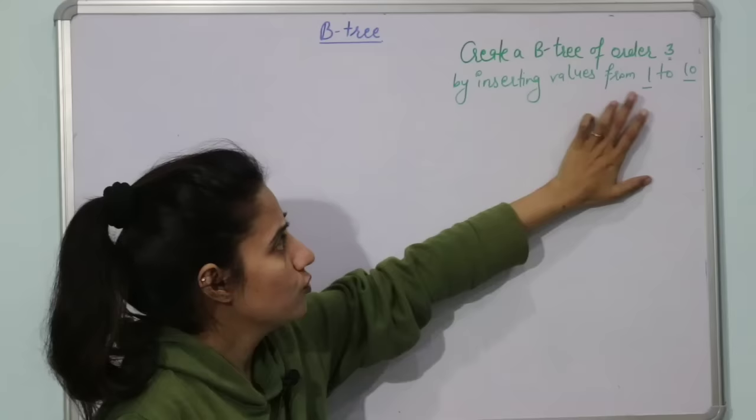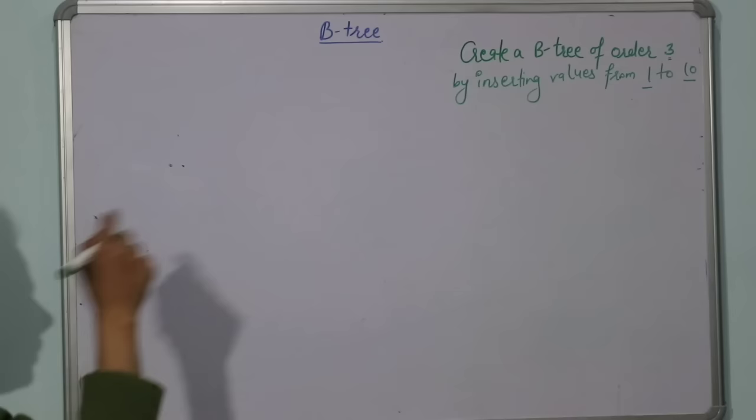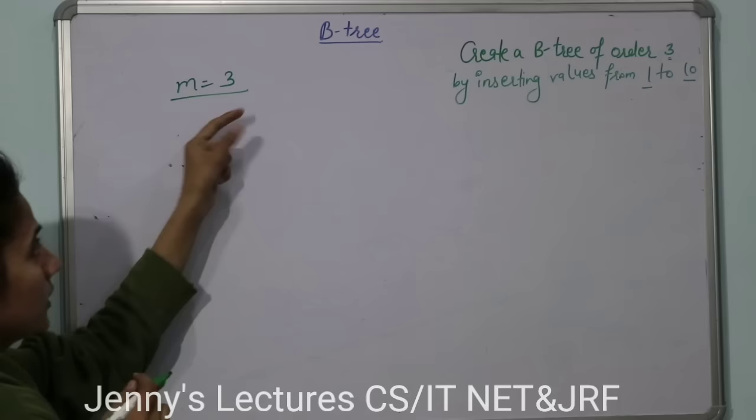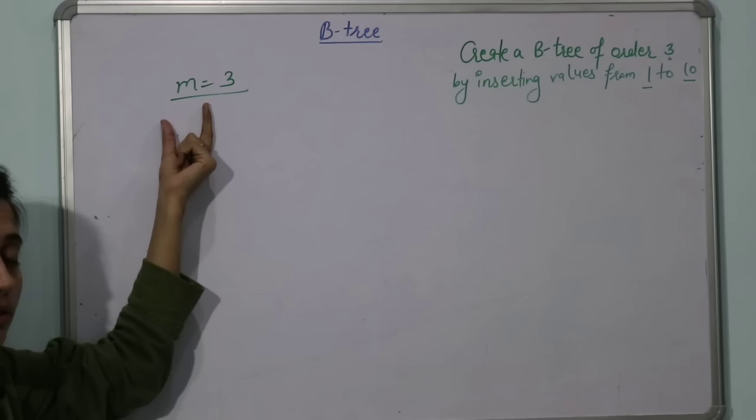The tree order is 3, so m value would be 3. Now see, m value is 3, so maximum how many children can there be for every node? 3. And maximum how many keys can there be? m minus 1, that is 2. You have to remember this, these are properties of the B-tree.